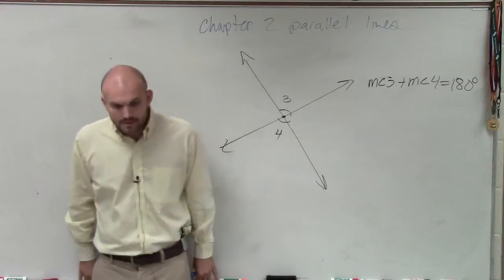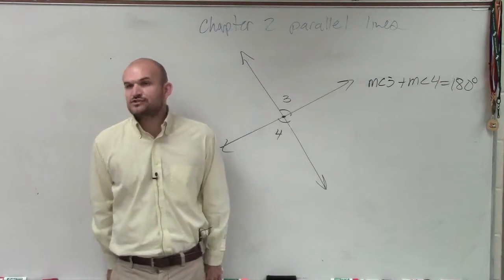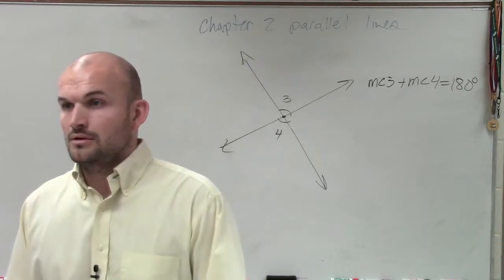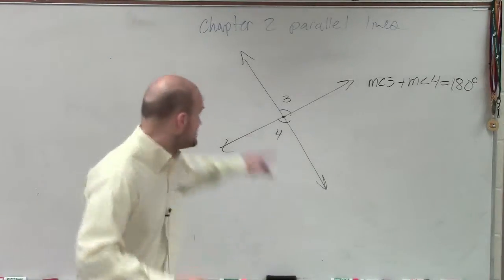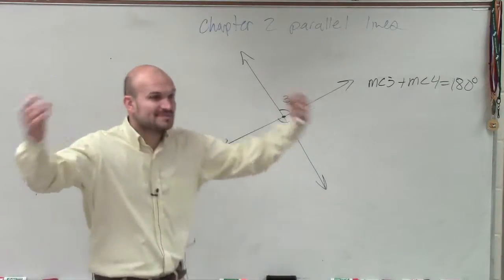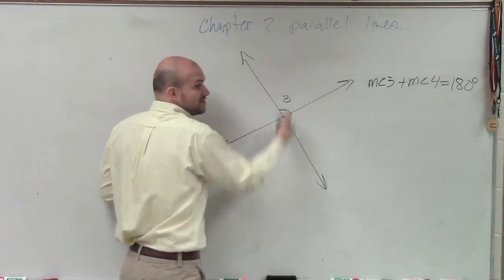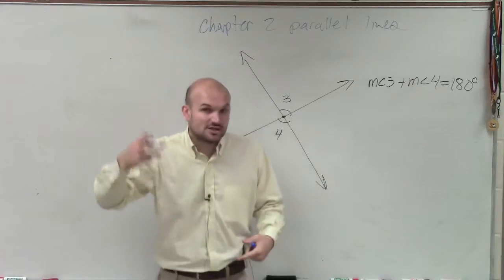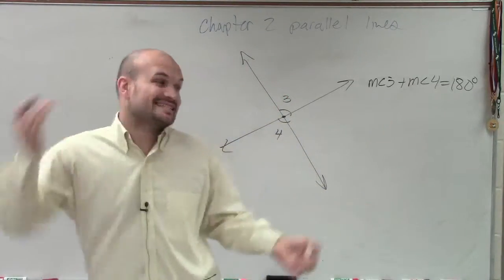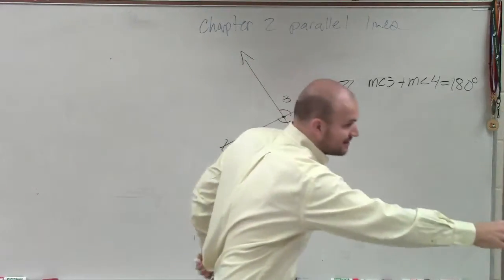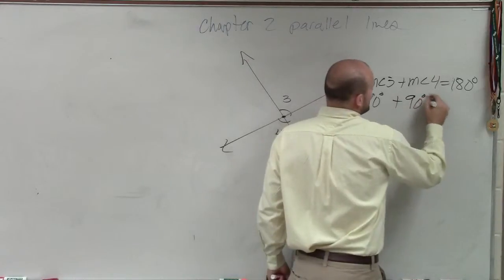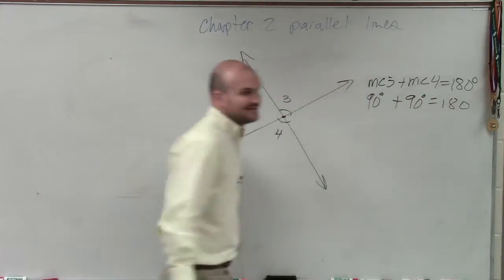Now, Jake, what is it we know about measures of angle three and angle four since they are vertical? They have to equal the same number. Exactly. These are the same. These two angles are the same because they're vertical, and they also have to be supplementary. They have to add up to 180. Is there any two numbers that you know that are exactly the same that add up to 180? 90 degrees plus 90 degrees equals 180. Sweet.